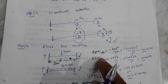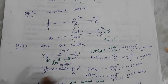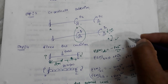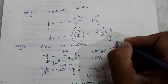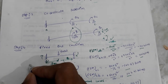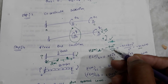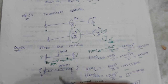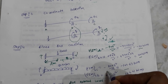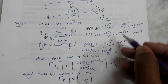The fixed end moment formula for a point load is P·a²·b / L² and minus P·a·b² / L², where a and b are distances from each end. Here, a is two metres from the left and b is four metres from the right. Clockwise rotation is taken as positive. For a uniformly distributed load, the fixed end moment is w·L² / 12.